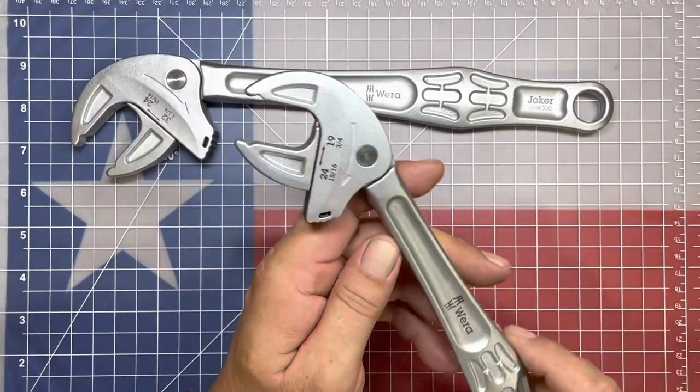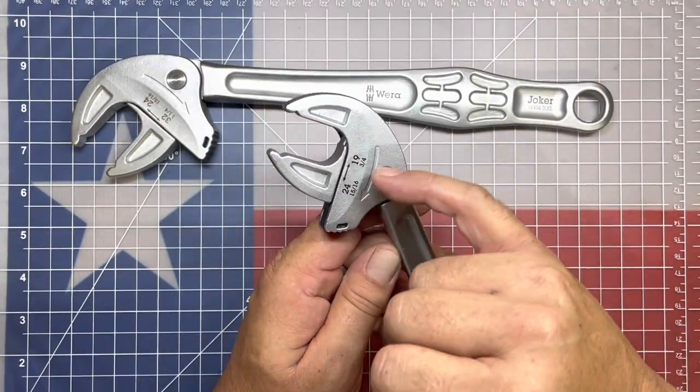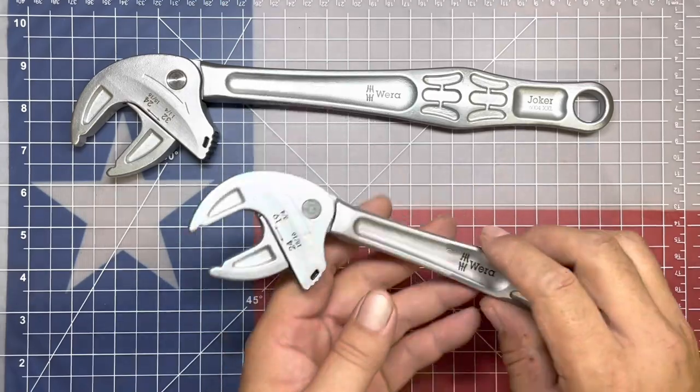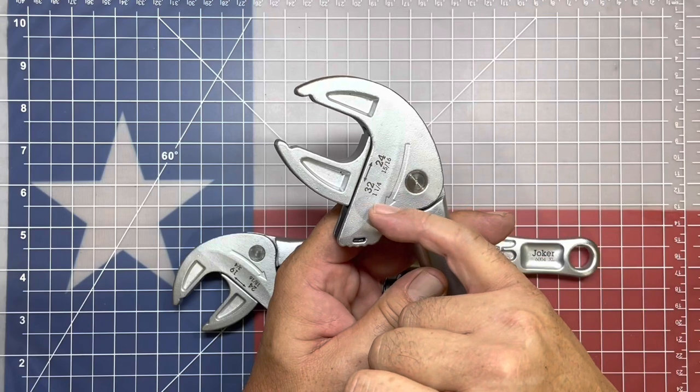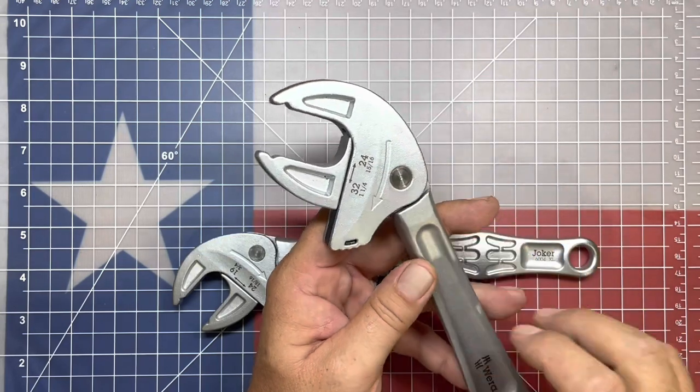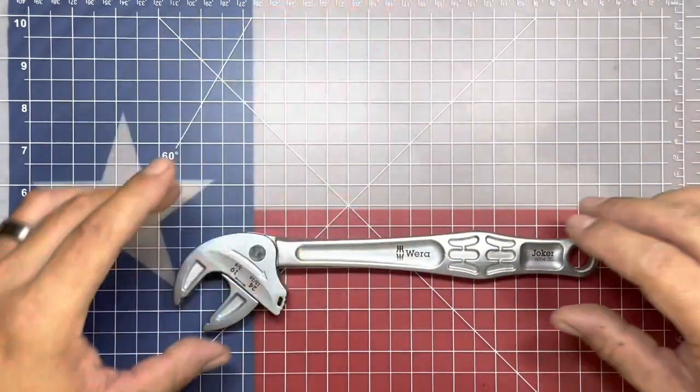And then the XL is 19 to 24 millimeters, three quarters to 15 sixteenths of an inch. And the XXL, 24 millimeters to 32 millimeters, 15 sixteenths to inch and a quarter. I'm going to set that one to the side for the time being.